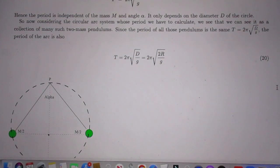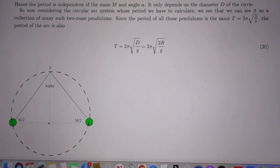So now consider the circular arc, whose period we have to calculate. We see that we can see it as a collection of many such two mass pendulums. Since the period of all those pendulums is the same, namely 2 pi times the square root of D over G, the period of the arc is also, and here it comes, 2 pi times the square root of capital D over G, which is 2 pi square root of 2R over G.